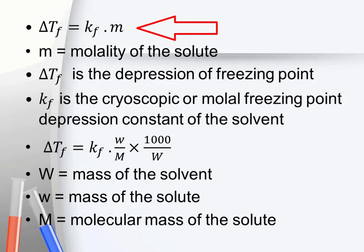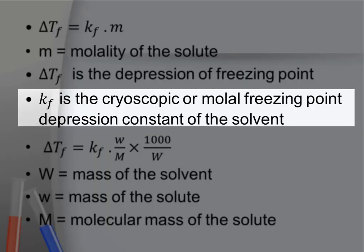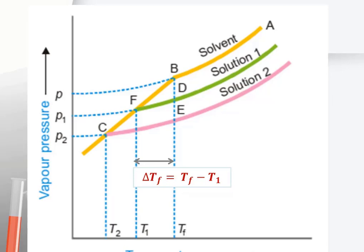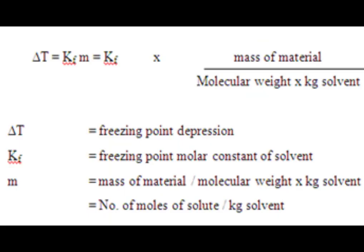Then from that Kf value we can find out the molecular mass of an unknown solute. The equation connecting the freezing point depression and the molality is: ΔTf = Kf × m, where Kf is the molar depression constant. It will be constant for a particular solvent. The molar depression constant, or cryoscopic constant, is defined as the freezing point depression when 1 mole of solute is dissolved in 1 kilogram of solvent.